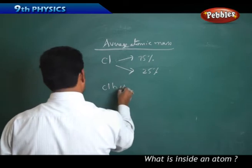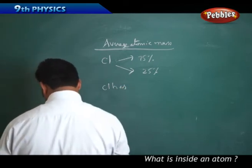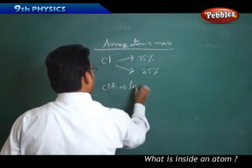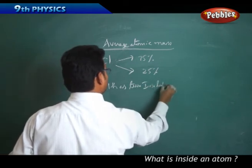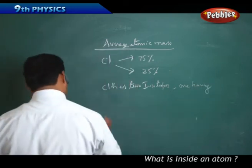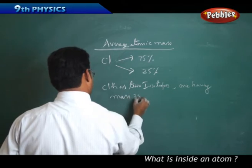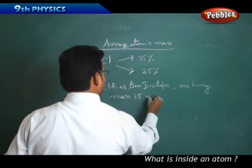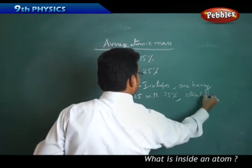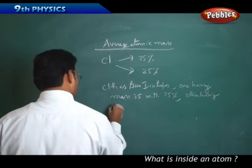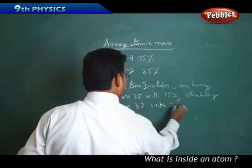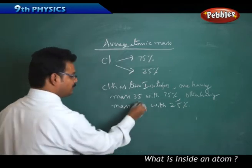Chlorine has two isotopes: one having mass 35 with 75% existence, other having mass 37 with 25% existence. See carefully - 35, 37.